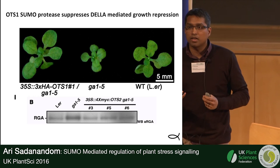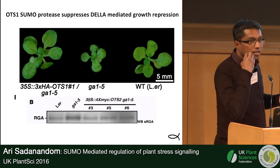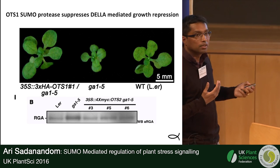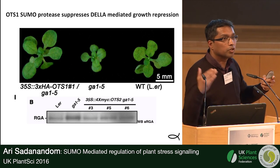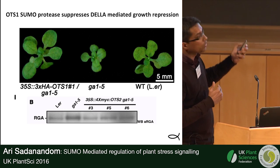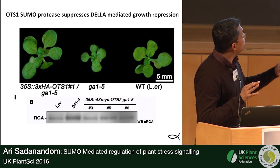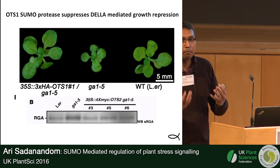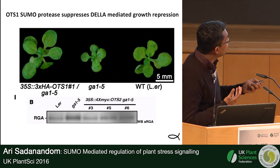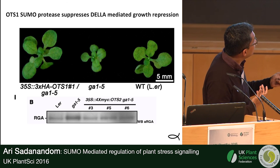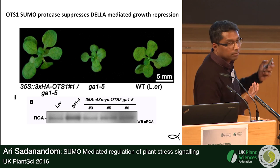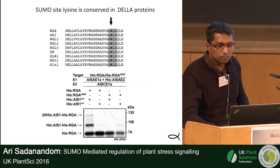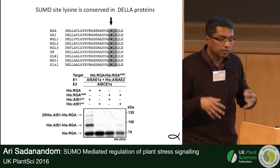We needed another way to prove this. Using a ga1-5 mutant that makes essentially no GA — and is therefore dwarf with lots of DELLA — when you overexpress the SUMO protease, you cleave SUMO off DELLA and can start to reverse dwarfism in these plants without any change in GA levels. So there is a GA-bypass mechanism that operates through SUMO. You can show this by genetics and western blots, and every time you overexpress the SUMO protease you lower DELLA levels and reverse dwarfism in a GA-independent manner.